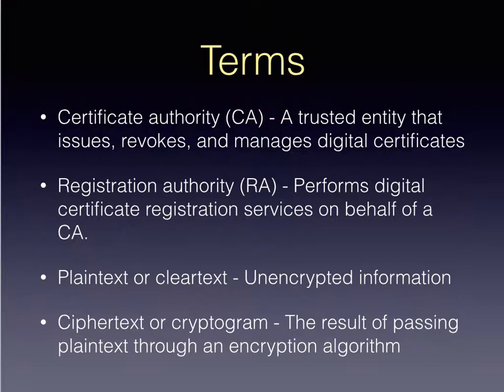Registration authorities are agents of the certificate authority that actually issue the digital certificates. They take care of the person or organization registering and requesting a certificate. Plain text or clear text is unencrypted information, whereas ciphertext, or a cryptogram, is the scrambled information that the plain text is turned into after it passes through an encryption algorithm.